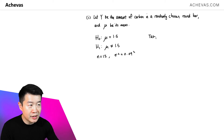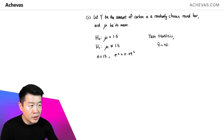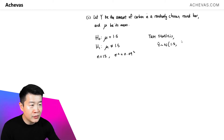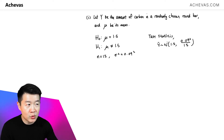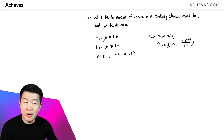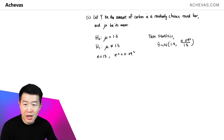For the test statistics, Y̅ follows a normal distribution with a mean of 1.5 and a variance of 0.09 squared divided by the sample size 15. Because it is given that the amount of carbon in the round bar follows a normal distribution, quoting Y̅ here is already possible without having to go through the central limit theorem or any other approximation.